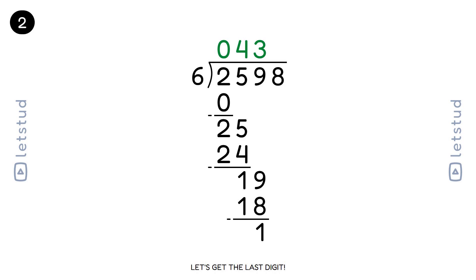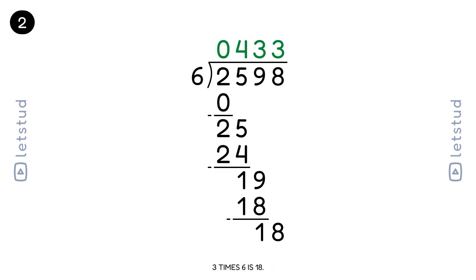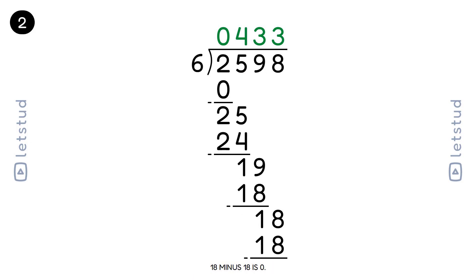Let's get the last digit. We have a remainder of 1 and bring down the 8 to make 18. 6 fits into 18 three times. 3 times 6 is 18. 18 minus 18 is 0.